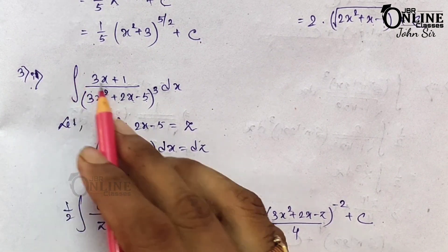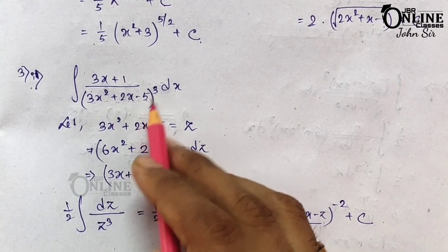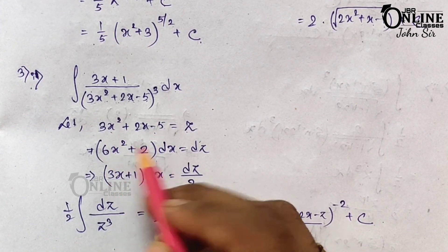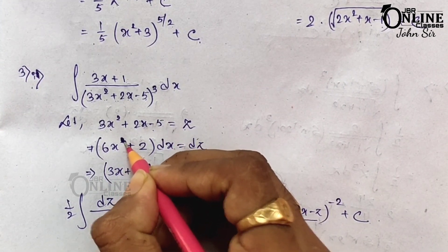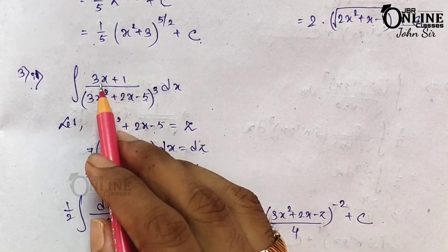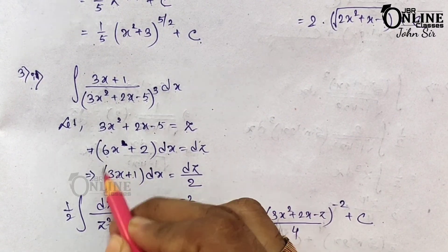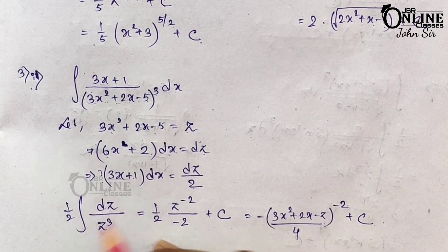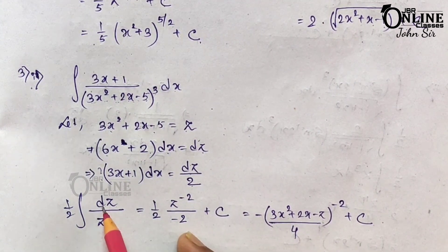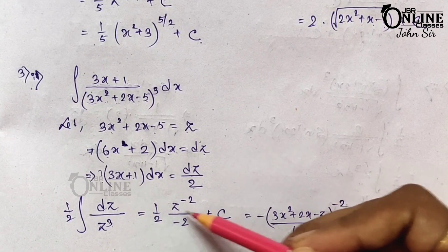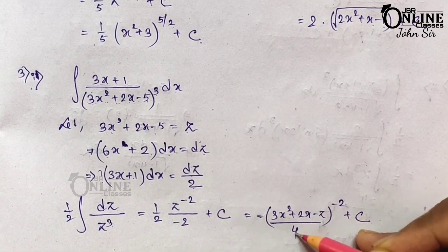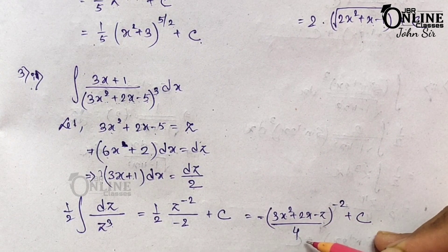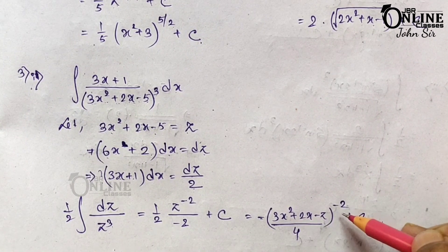Problem 3: ∫(3x + 1)/(3x² + 2x − 5)³ dx. Let 3x² + 2x − 5 = z. The derivative is 6x + 2. Taking 2 as common gives 2(3x + 1), so (3x + 1)dx = dz/2. The integral becomes (1/2)∫z⁻³ dz = (1/2) · z⁻²/(−2) + C = −1/4 · (3x² + 2x − 5)⁻² + C, or equivalently −1 / [4(3x² + 2x − 5)²] + C.